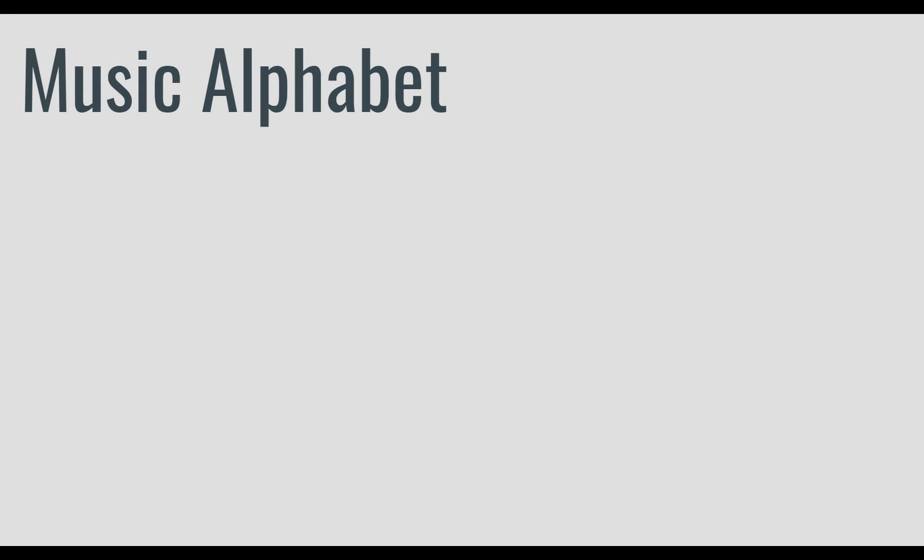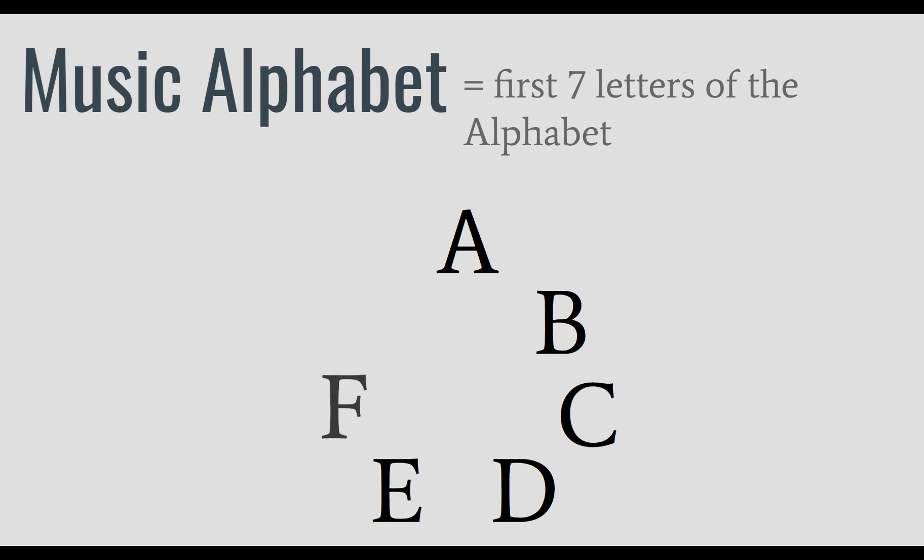All right, a quick review before we begin. Reminder that our musical alphabet is made up of the first seven letters of the English alphabet: A, B, C, D, E, F, and G.